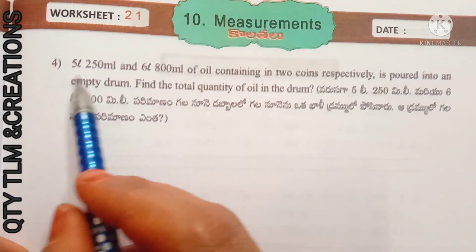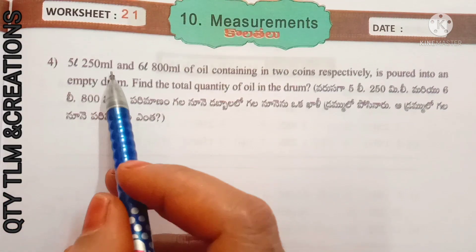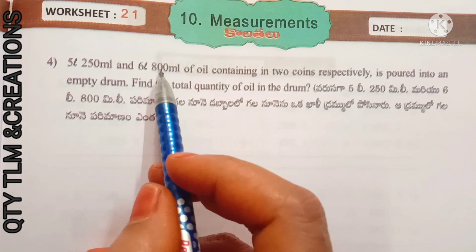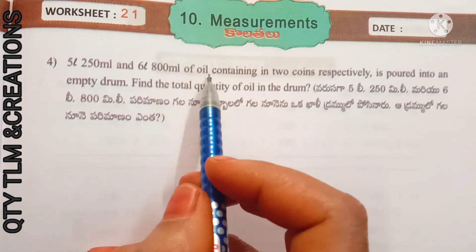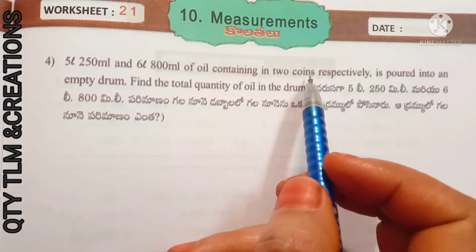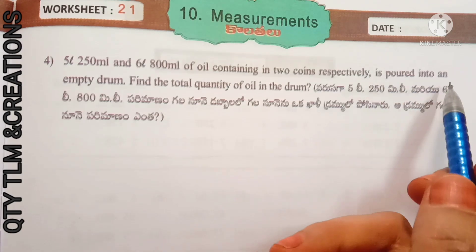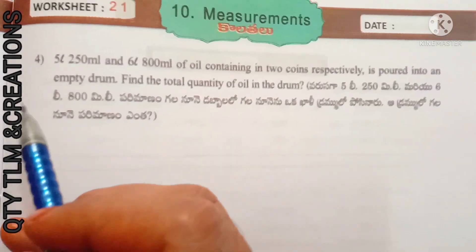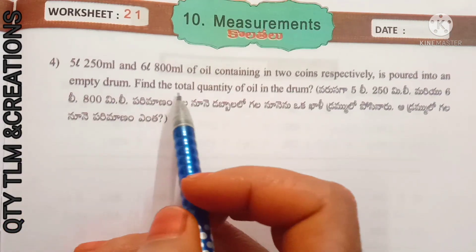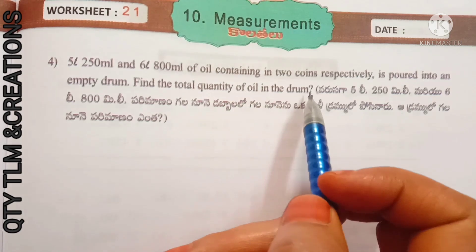Next question: 5 liters 250 milliliters and 6 liters 800 milliliters of oil contained in two cans respectively are poured into an empty drum. Find the total quantity of oil in the drum.